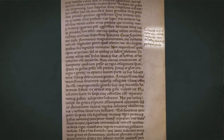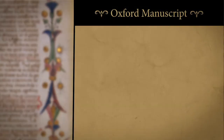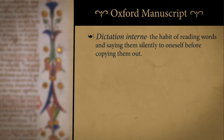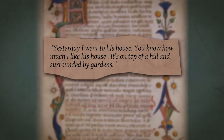A mistake of this kind can easily occur when practicing what the French call dictation interne — inner dictation — the habit of reading words and saying them silently to oneself before copying them out, as was common in medieval and Renaissance scriptoria. For instance, imagine that a group of copyists working independently had to write down a phrase like this: 'Yesterday I went to his house. You know how much I like his house. It's on top of a hill and surrounded by gardens.'